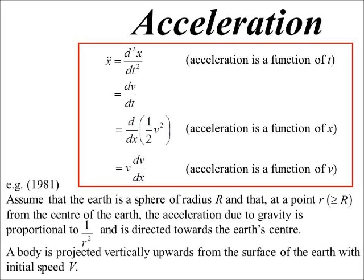Assume that the Earth is a sphere, a radius of capital R, and that at a point little r, which is bigger than capital R, strange, you would have thought it was the other way around, but there you go. From the center of the Earth, the acceleration due to gravity is proportional to 1 on little r squared, directed towards the Earth's center. A body is going to be projected vertically upwards from the surface of the Earth with an initial speed, capital V.